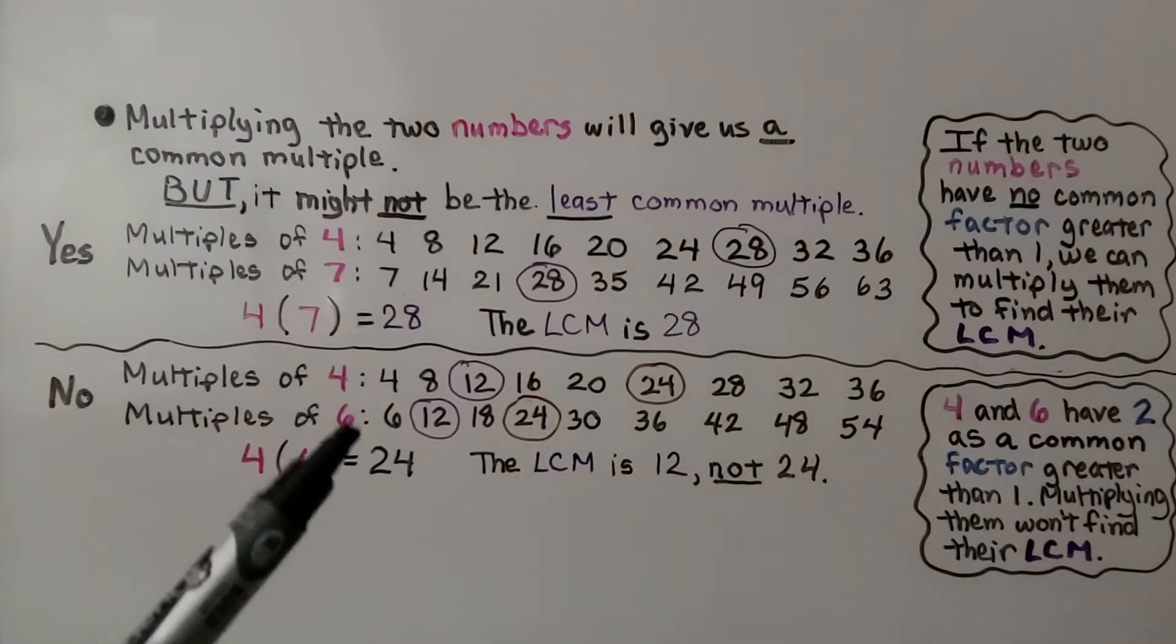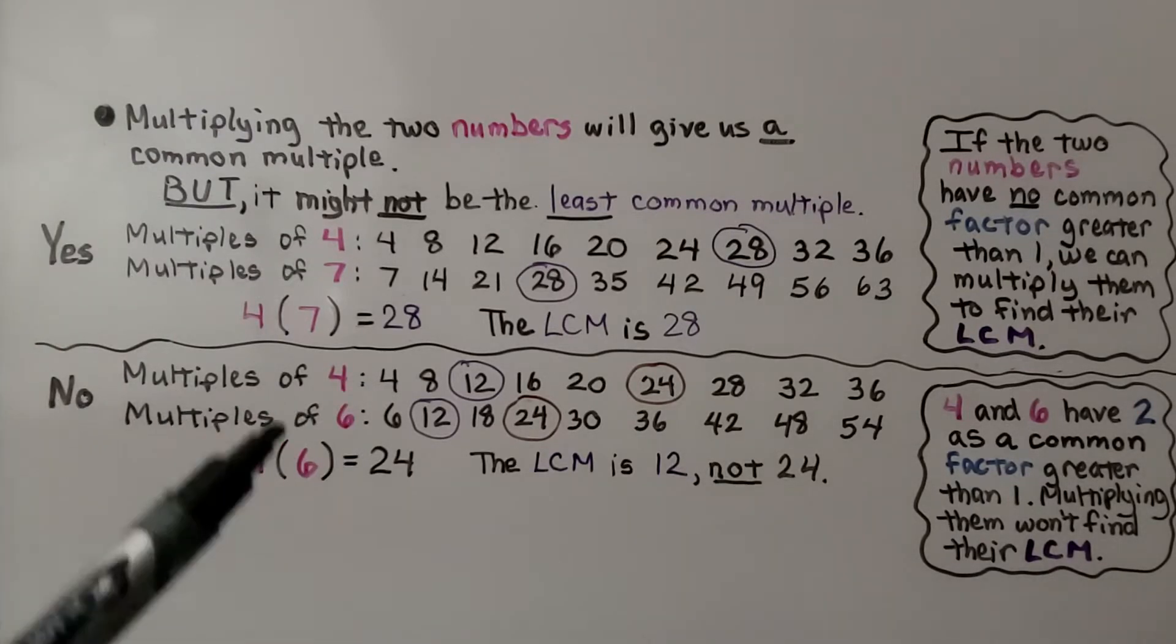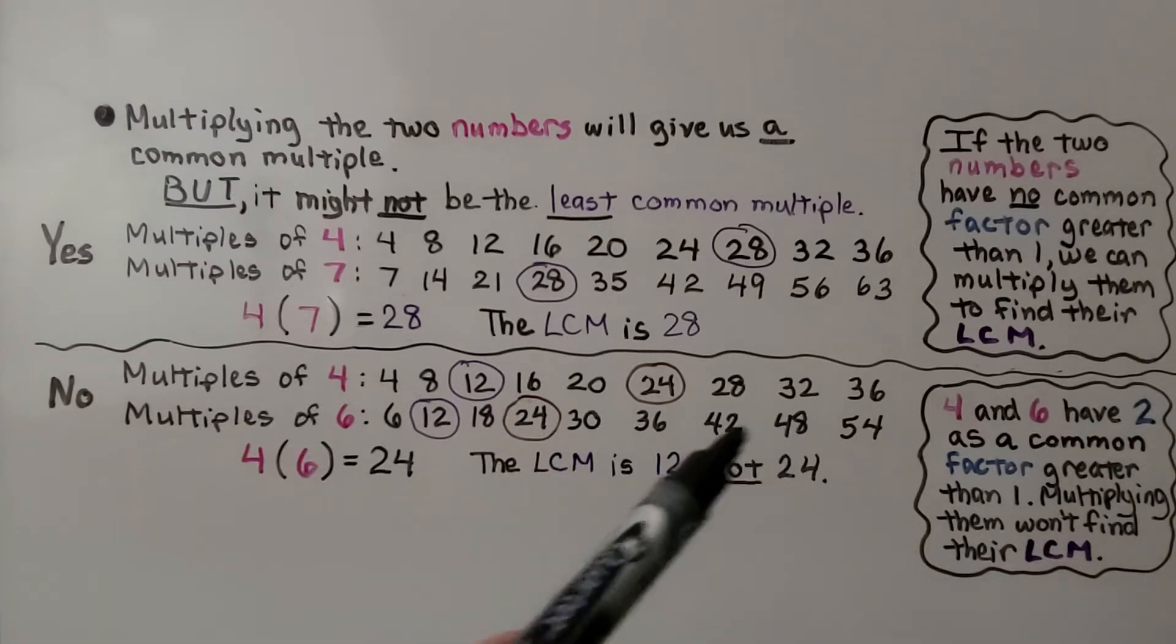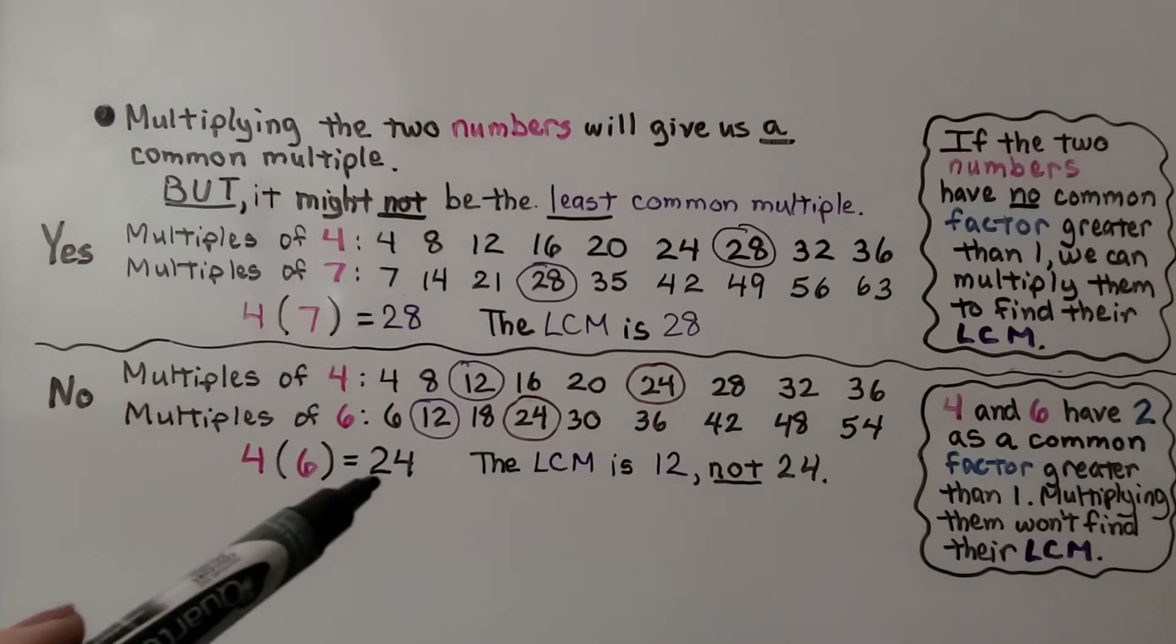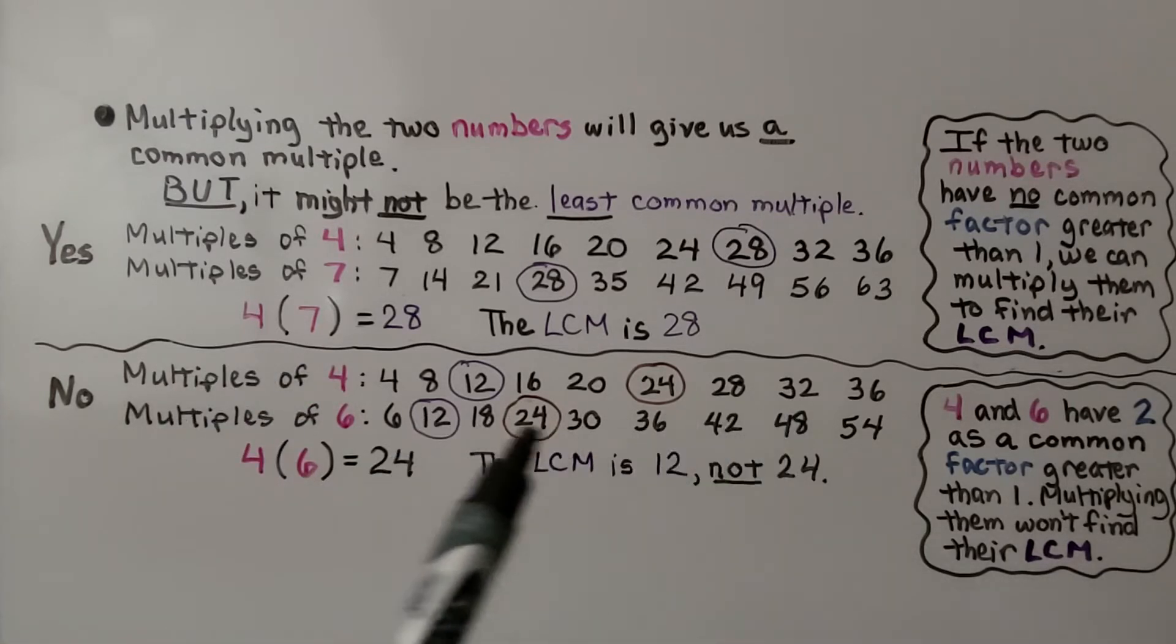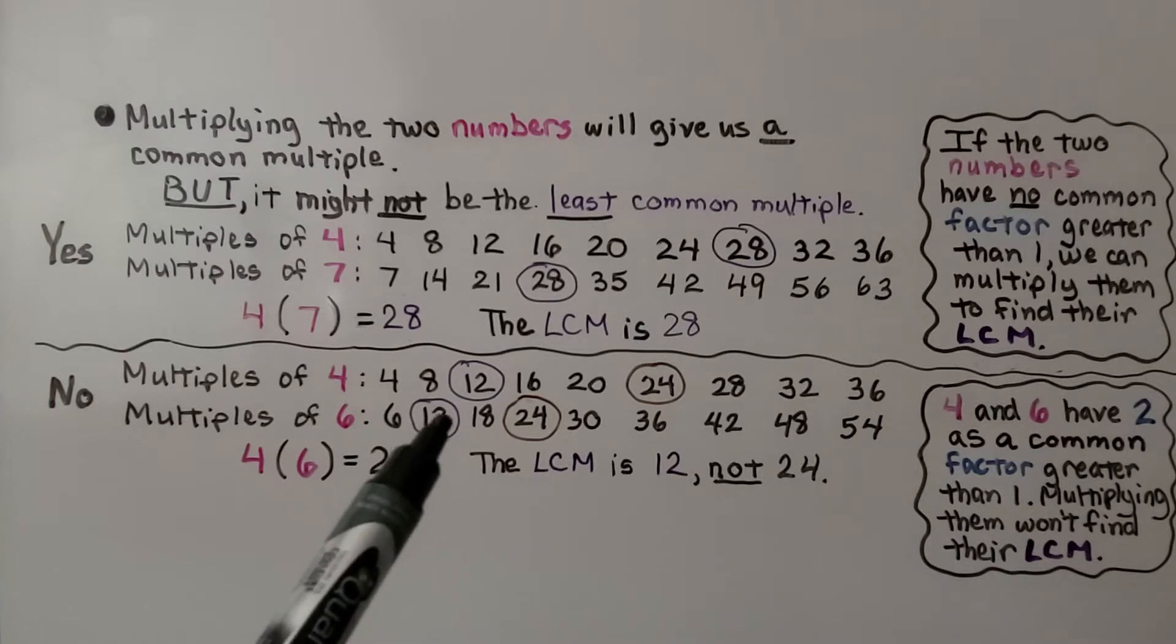Now it will not work for 4 and 6, so that's a no. We list the multiples of 4, we list the multiples of 6. If we try multiplying them, 4 times 6 is equal to 24. But when we make the list, we see the least common multiple is 12. It's 12, not 24.